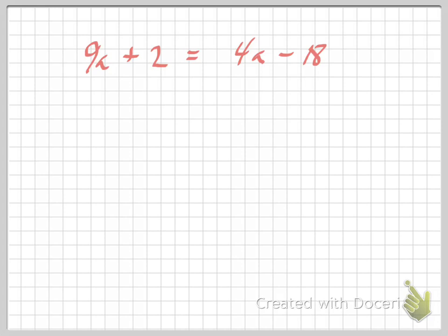Notice that you've got a variable on both sides. You've got a 9a on one side, and you've got a 4a on the other. Now, here's the deal. All we've got to do to get this equation to look like all the other ones we've done so far this week is to get the variables together on the same side.